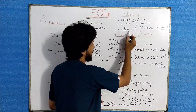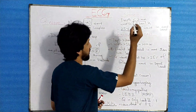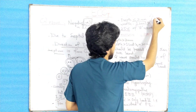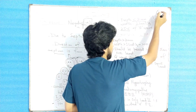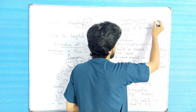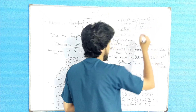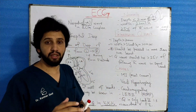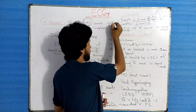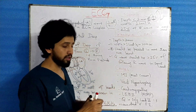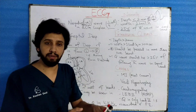Its amplitude will be 25% of the R wave in the same lead. This is the PQRS complex: the R wave and the Q wave. This Q wave will always be 25%, which means it will be one-fourth of the R wave — the Q wave will be equivalent to one-fourth of the R wave of the same lead.